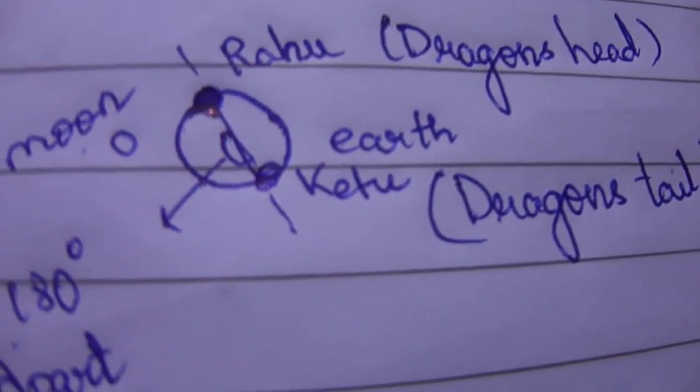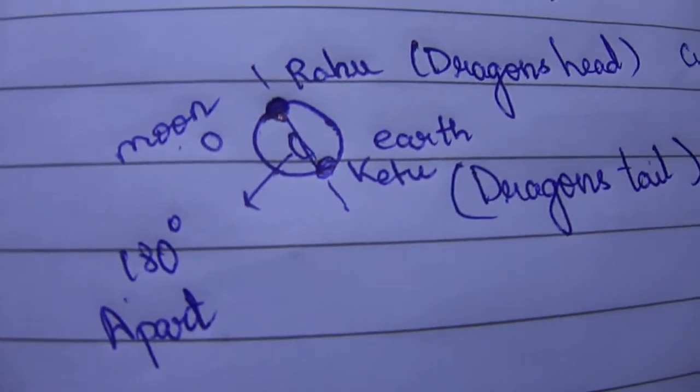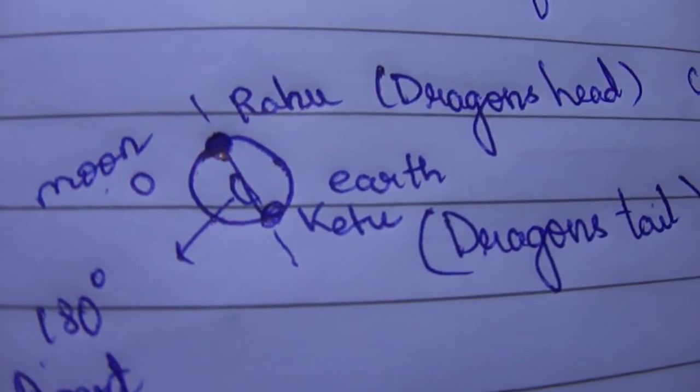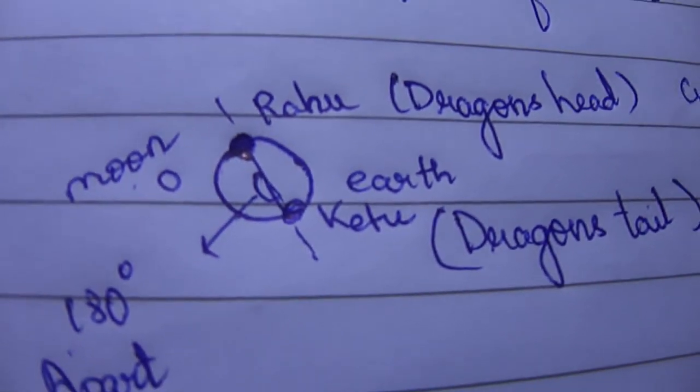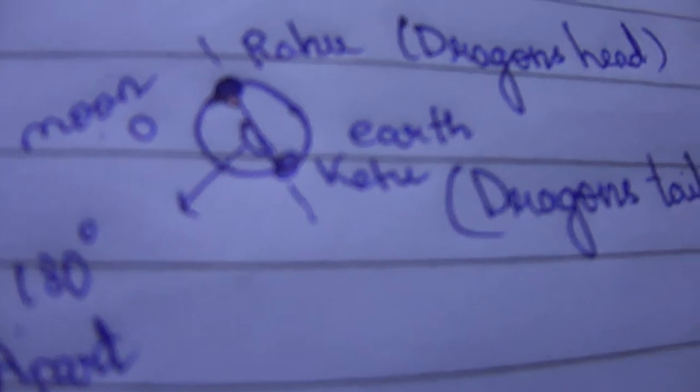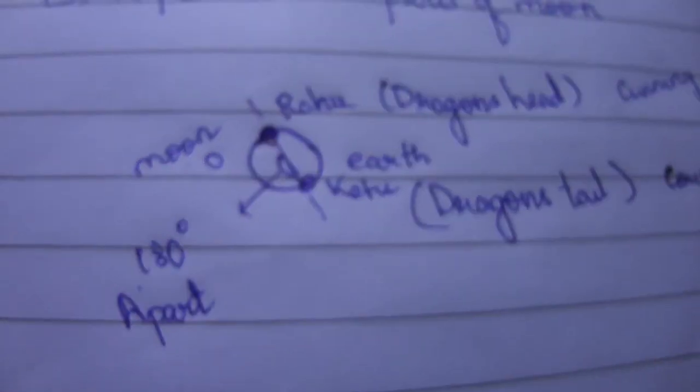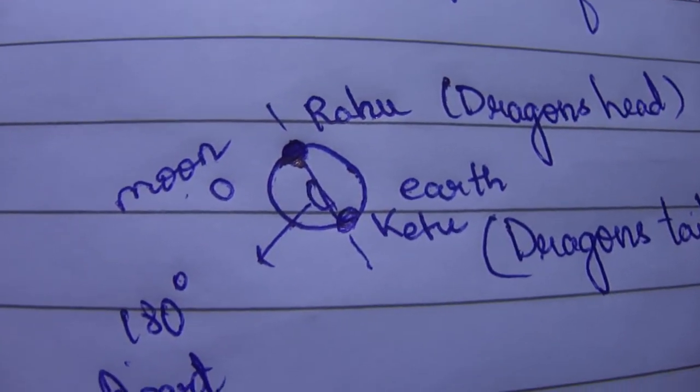Rahu and Ketu are just points on the Earth and they are 180 degrees apart. Rahu is referred to as the dragon's head and Ketu as the dragon's tail. Rahu is said to be a very evil and cruel point, whereas Ketu is known for its courage.